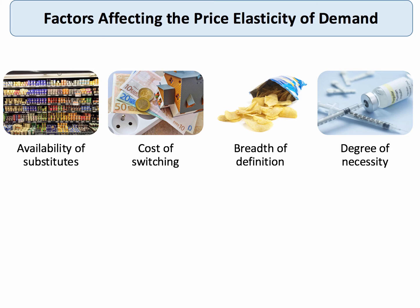The breadth of definition of a product also affects the elasticity of demand. If a good is broadly defined — the demand for potatoes, petrol, or meat — demand is often inelastic. But if we take a narrow definition of a particular product, like a brand of beef or brand of potato chip, then demand might be more price elastic because there are many more competing products to consider.